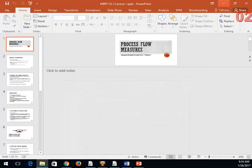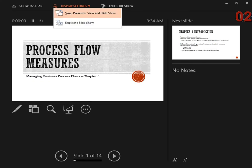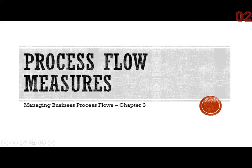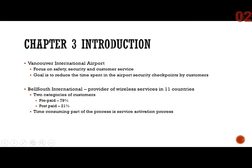Let's go ahead and start with chapter three. Chapter three is about process flow measures. The chapter starts out with a couple of examples of two different types of processes. One of them is Vancouver International Airport, which is well known for getting travelers through in a timely manner. Their focus is on safety, security, and customer service, and their goal is to reduce the time spent at security checkpoints.